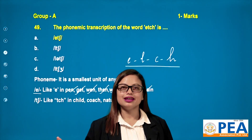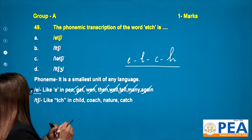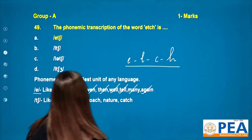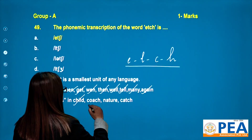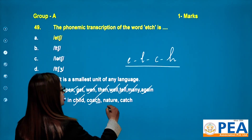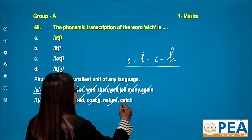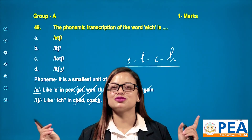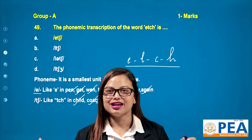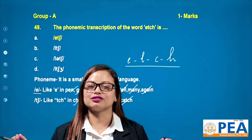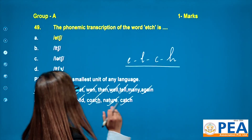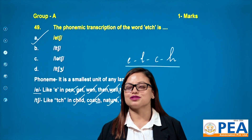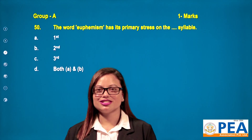Similarly, another sound is the 'ch' sound, just like in child, coach, nature. By the combination of these two different phonemes, it becomes 'H'. So the correct answer is none other than the very first option. I hope you have understood well.